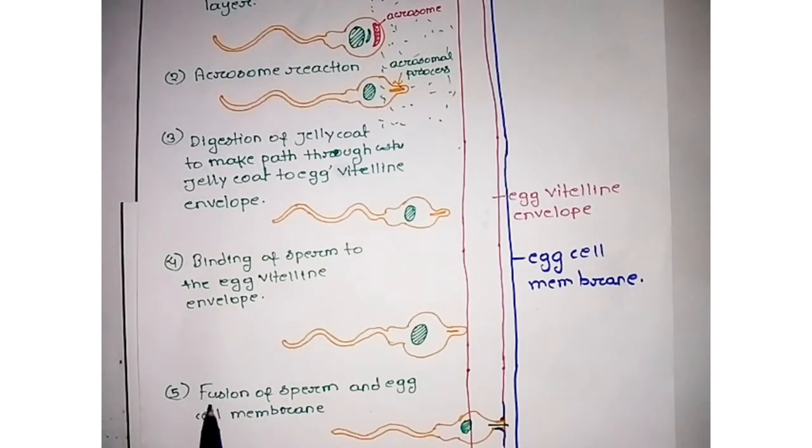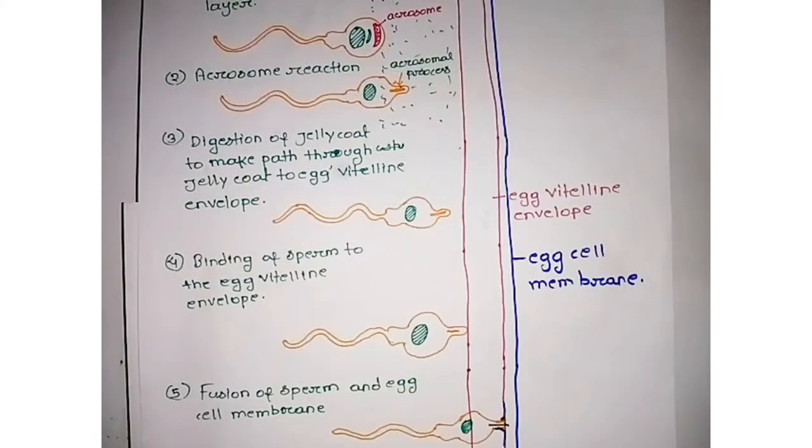At the fifth step, fusion of sperm and egg cell membrane occurs. This is sea urchin sperm cell membrane and this blue is egg cell membrane. The fusion of sperm cell membrane and egg cell membrane occurs.